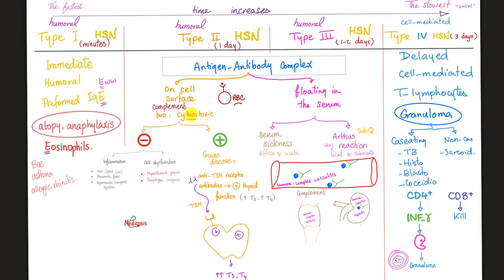Type 2 is cytotoxic. We have an antigen-antibody complex on the surface of the cell. These antibodies could inhibit the target most of the time, or they could stimulate the target in one case only. That's why some textbooks define that stimulating subtype as type 5 hypersensitivity — but that bizarre classification only lasted briefly, and then they went back to four types. The inhibitory antibodies can cause inflammation and cell dysfunction.